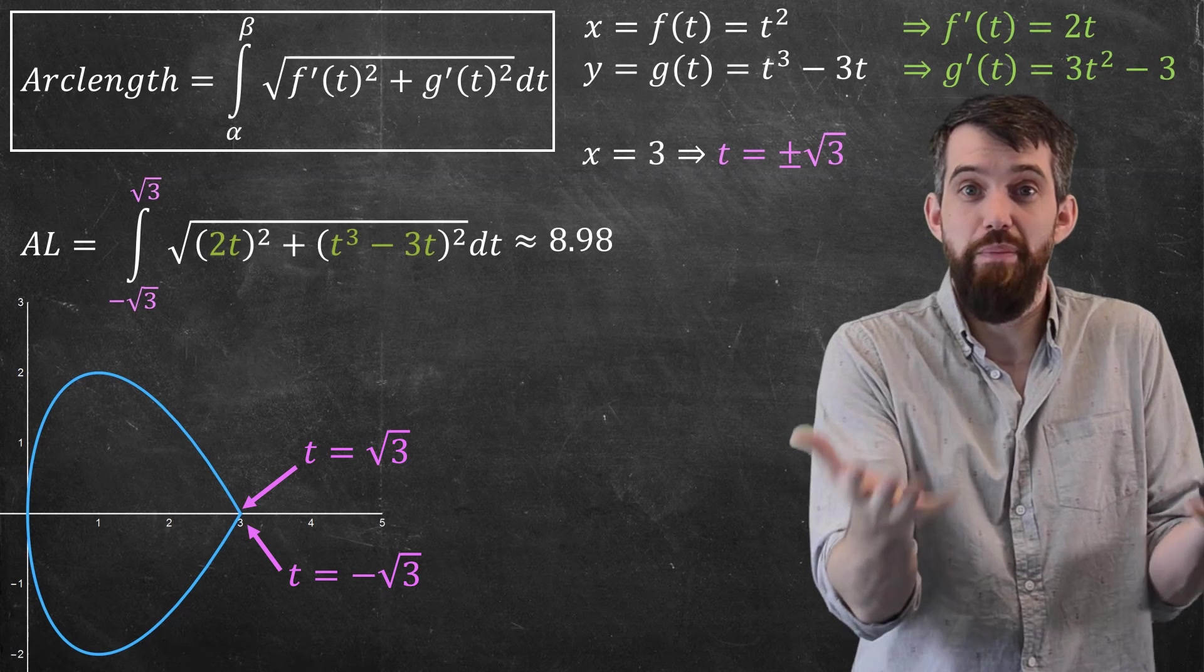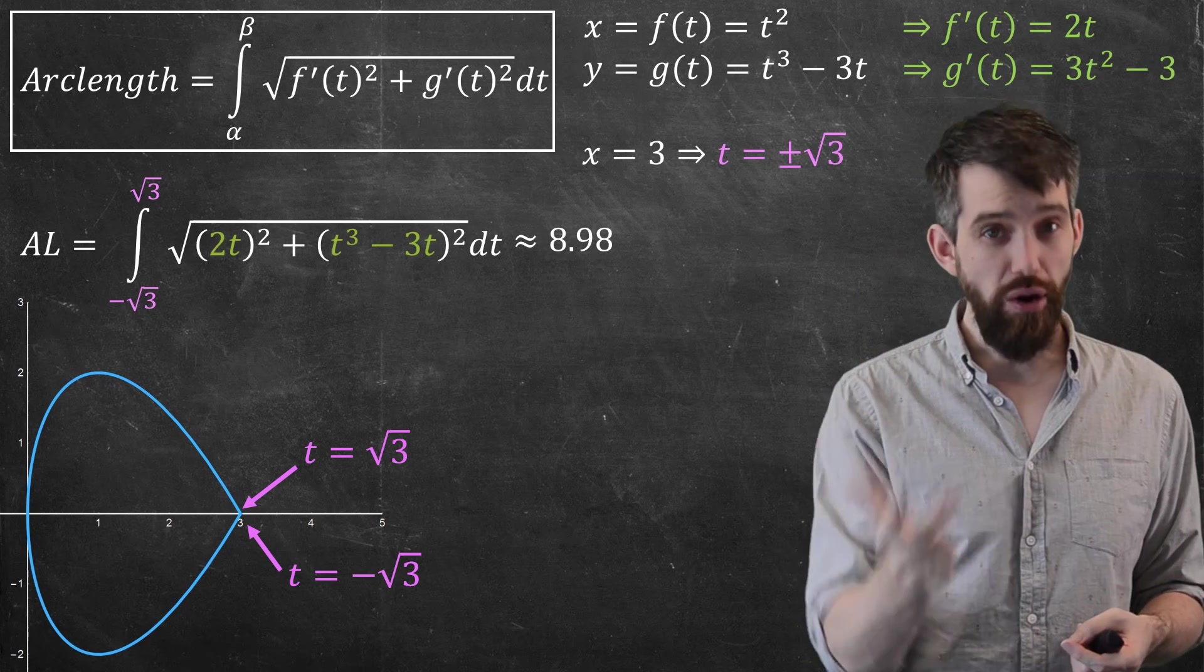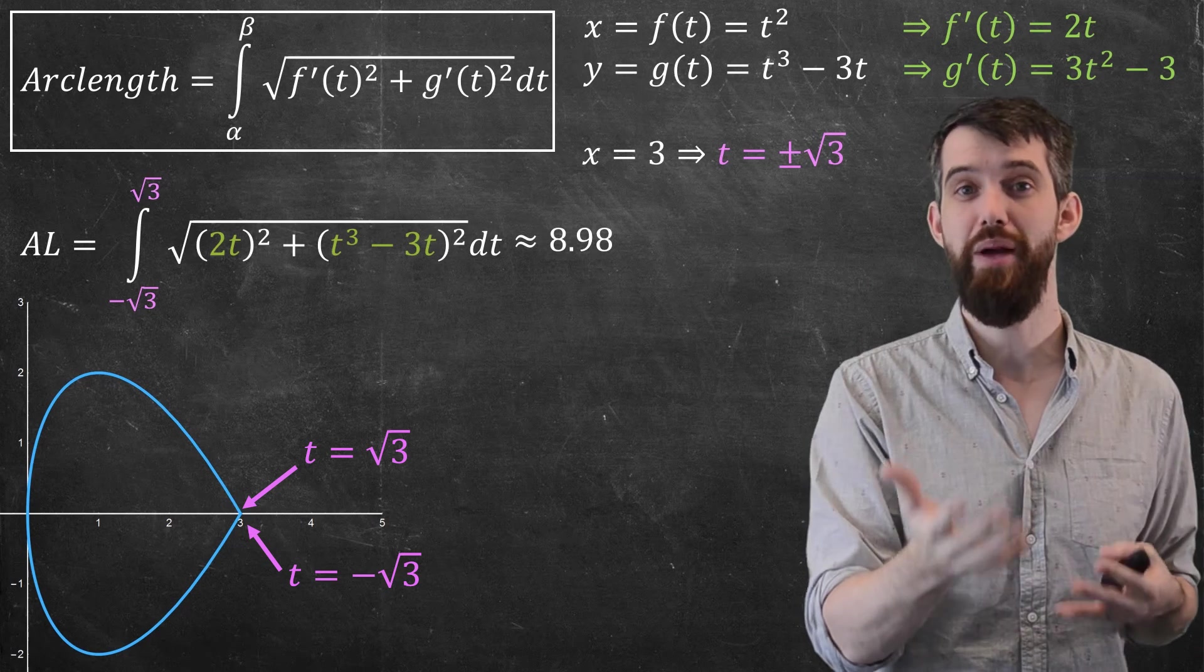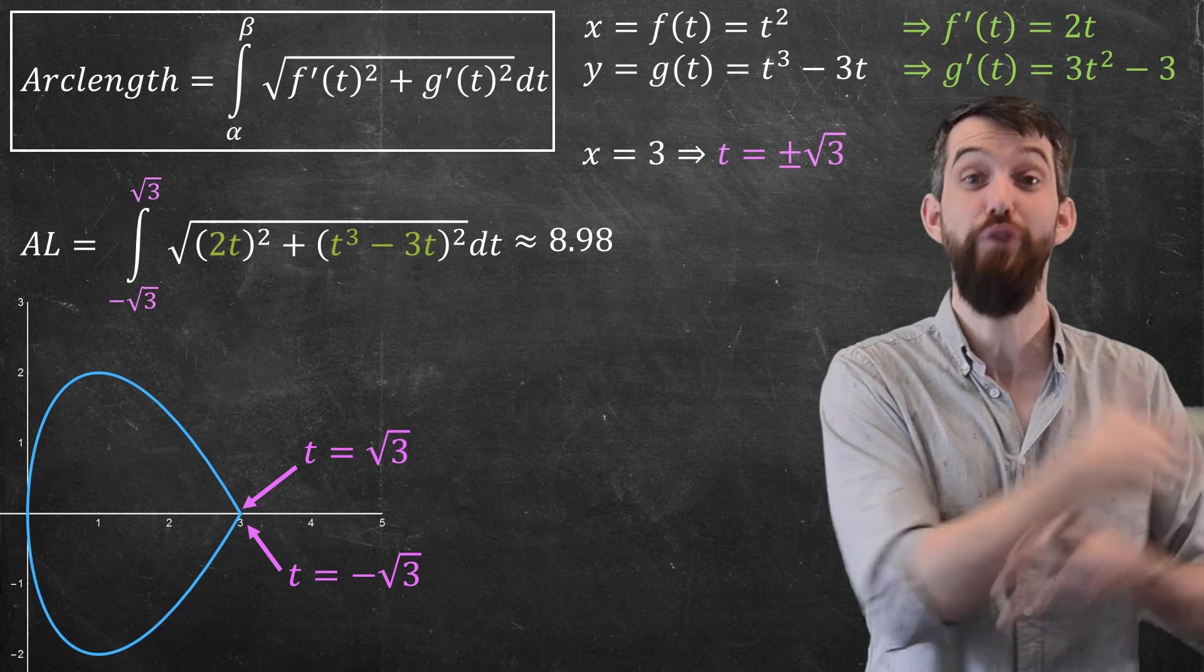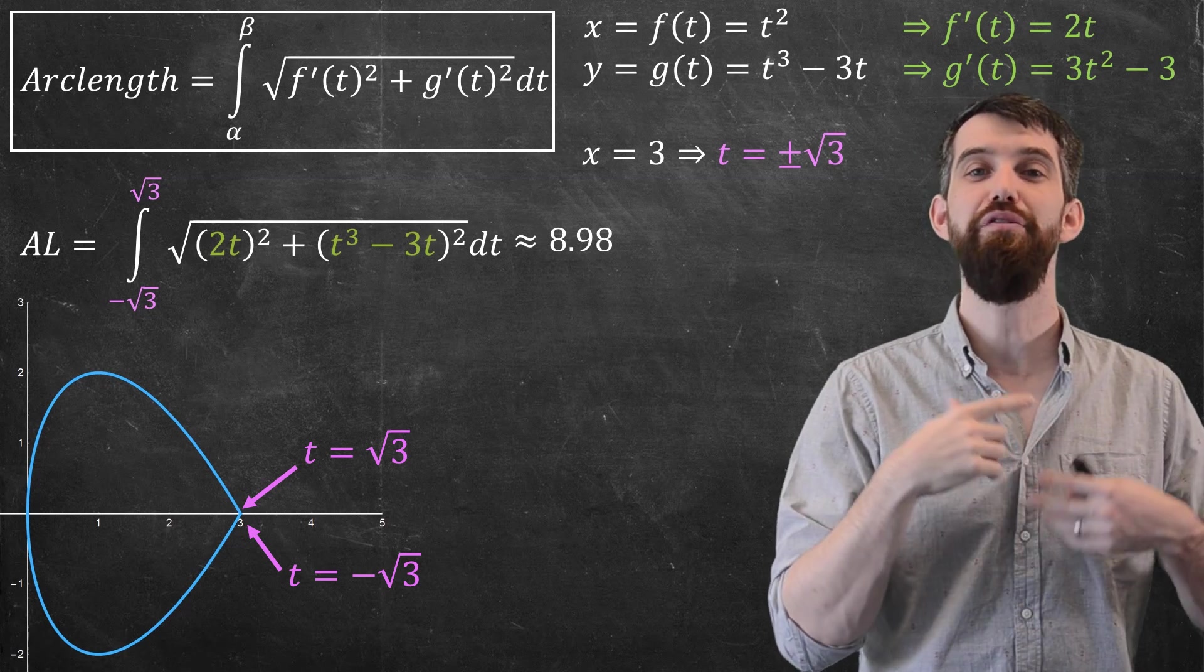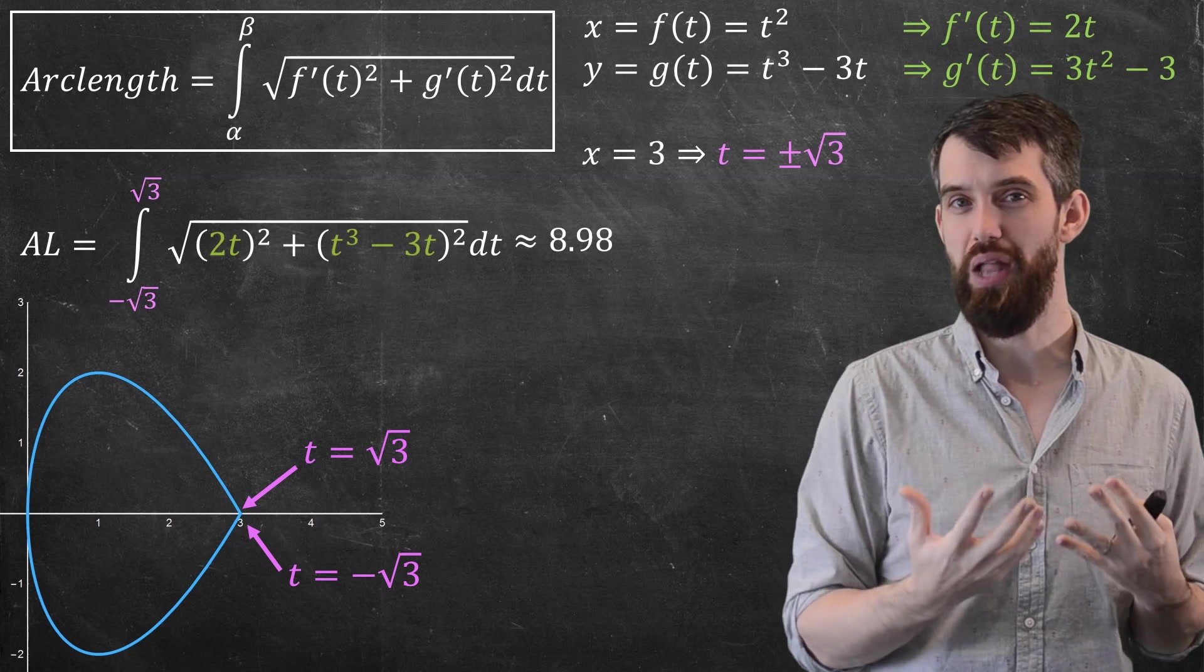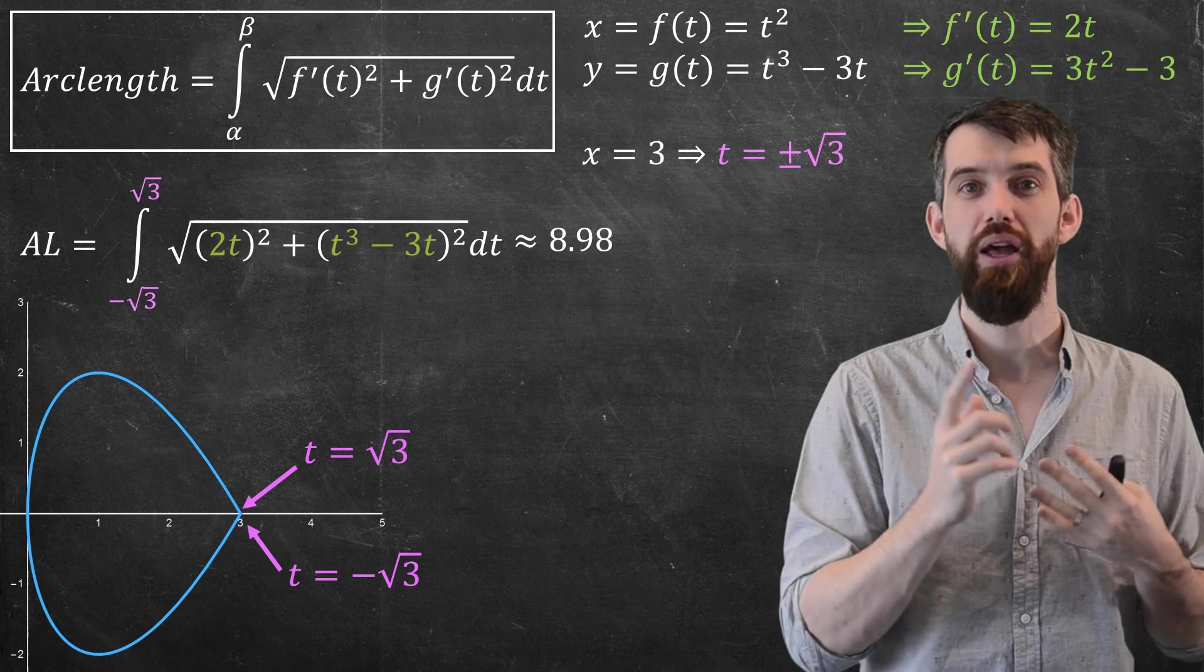So, this is pretty empowering. Now we can do tangent lines, we can do areas, and finally with this video we can do arc lengths if I give you a parametric curve, where previously, before this little series of videos, all we were able to do were those things when you had it of the form y is a function of x, a function that would pass the vertical line test. Now we can do it in the more general parametric case.